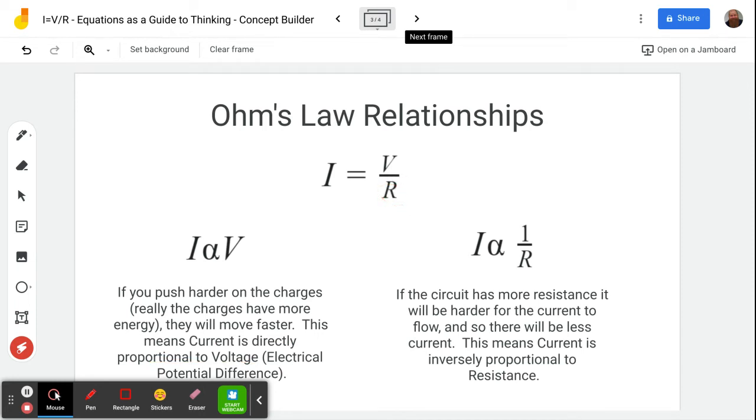The resistance, on the other hand, is in the denominator. That makes this an inversely proportional relationship, which we see here. If the resistance gets bigger, the current gets smaller. So if the circuit has more resistance, it'll be harder for the current to flow, and so there'll be less current. This means the current is inversely proportional to the resistance. Bigger resistance, smaller current. Smaller resistance, bigger current.